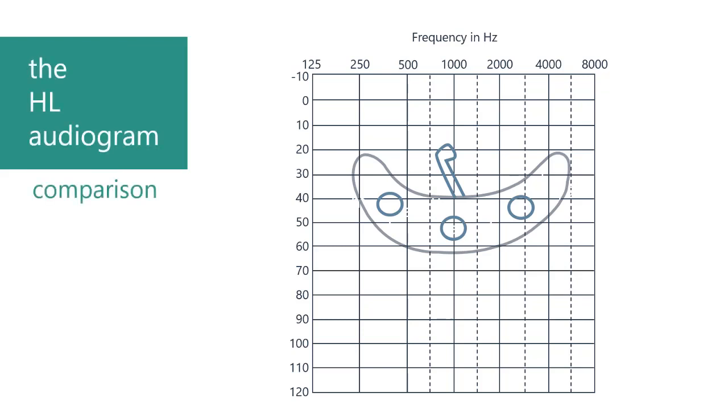Let's first have a quick look at the HL audiogram. Low frequencies are marked at the left, going to high frequencies on the right. With this chart, soft sounds are marked at the top, going to loud sounds at the bottom, measured in decibels.